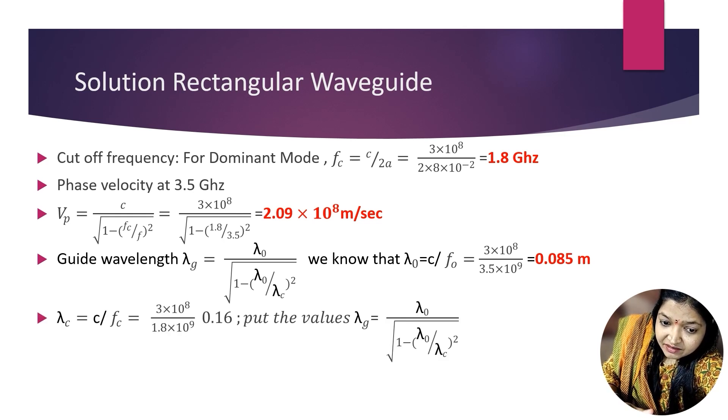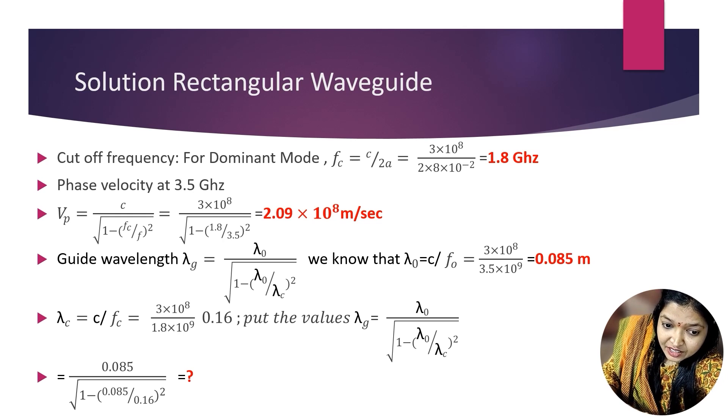Guide wavelength. The formula is lambda_g equals lambda_0 divided by under root of 1 minus lambda_0 divided by lambda_c the whole bracket square. So we know that lambda_0 is C divided by f_0. Lambda_0 is 0.085 m. So put the values in formula: lambda_g equals lambda_0 0.085 divided by under root of 1 minus 0.085 divided by 0.16 square.